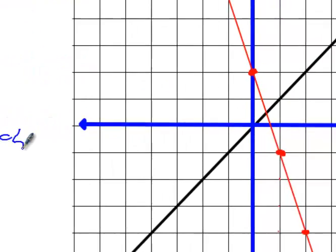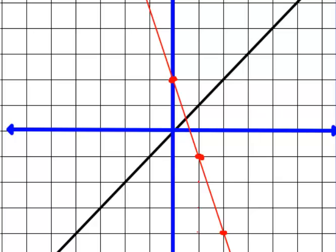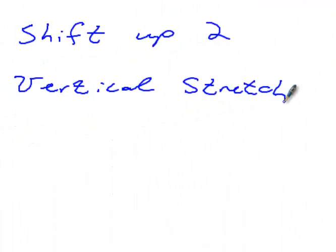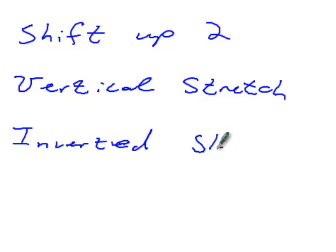And then what else changed? What's the slope of this line — positive or negative? Positive. What about the red line? Negative. So we inverted the slope. There's a lot of different ways you can phrase that — you can just say our slope is now negative or something like that. I'm going to put in 'inverted slope.' And that means instead of it being increasing, it's decreasing.